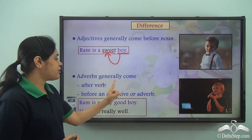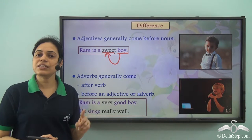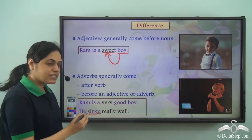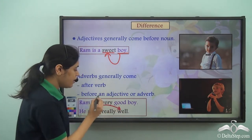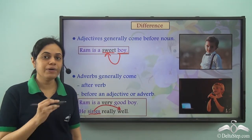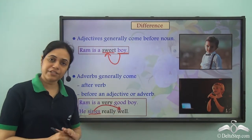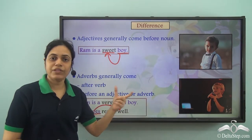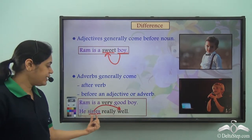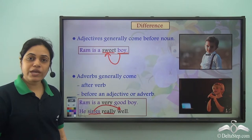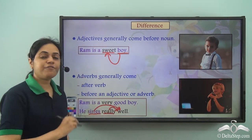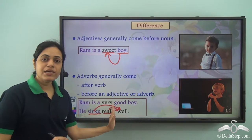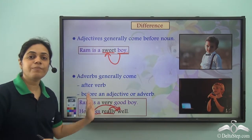Whereas adverbs generally come after the verb. In 'He sings really well,' sings is a verb and well is the adverb describing it — well comes after the verb sing. But when adverbs describe an adjective or another adverb, they come before it. In 'He sings really well,' really is also an adverb describing the adverb well, and it comes before well.